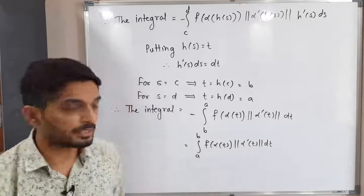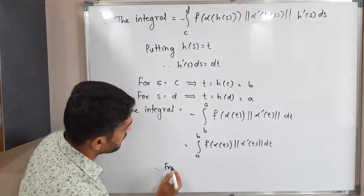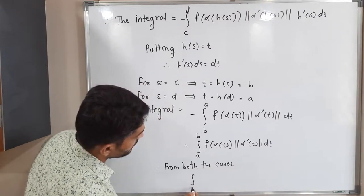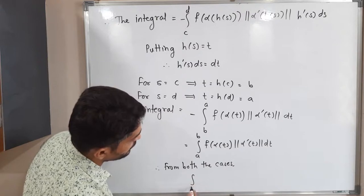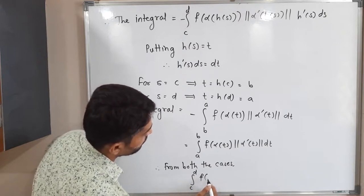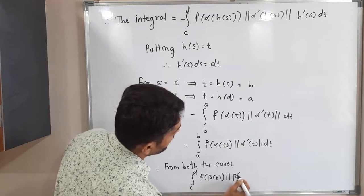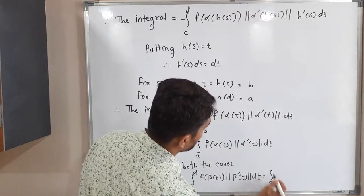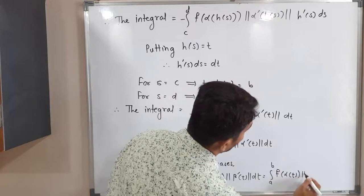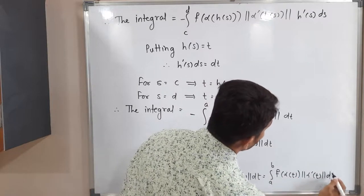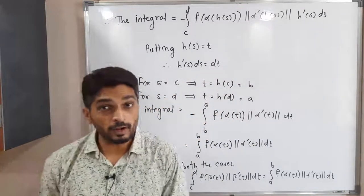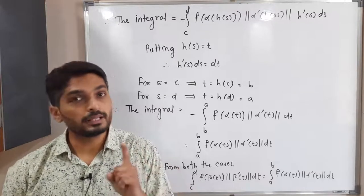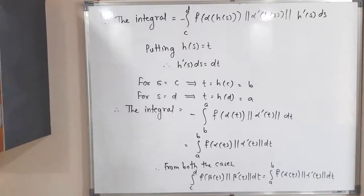Therefore from both cases, we have shown that the integral from C to D of F(beta(T)) · ||beta'(T)|| dT equals the integral from A to B of F(alpha(T)) · ||alpha'(T)|| dT. This means that if we consider parameterization alpha or beta, the value of the line integral will be the same, provided both parameterizations are equivalent. Thus the result is proved.